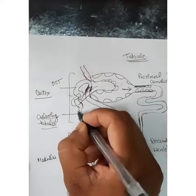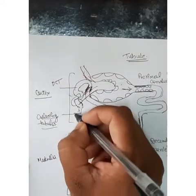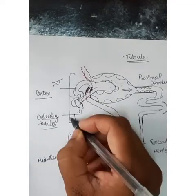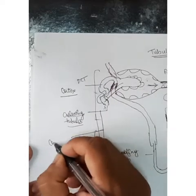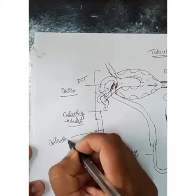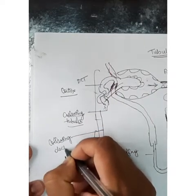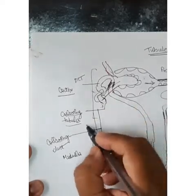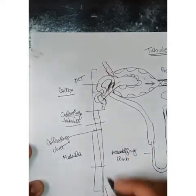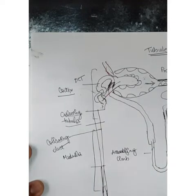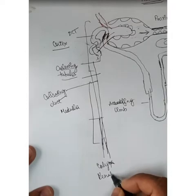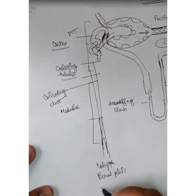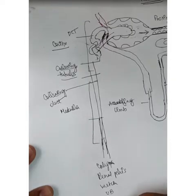From the connecting tubules it leads to the collecting ducts — first the cortical collecting duct, then the medullary collecting duct, which drains to the calyx, then to the renal pelvis, then to the ureter, then the urinary bladder, and finally the urethra.